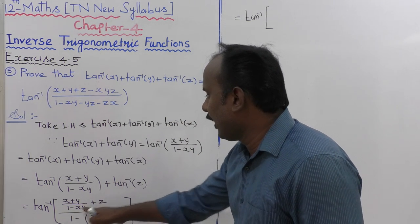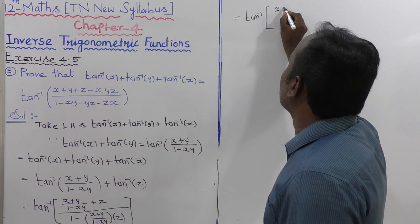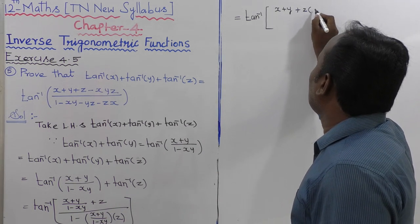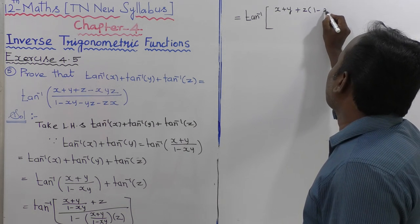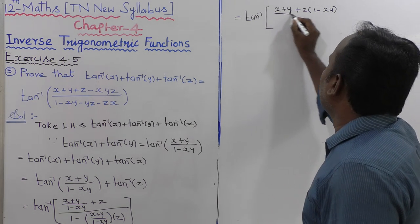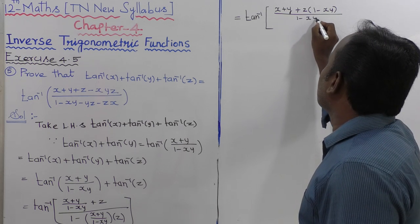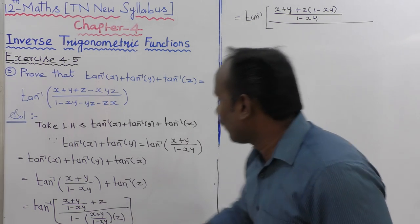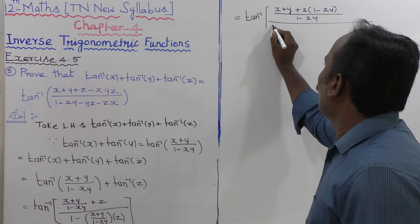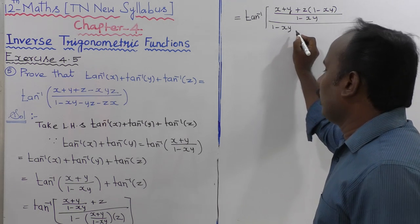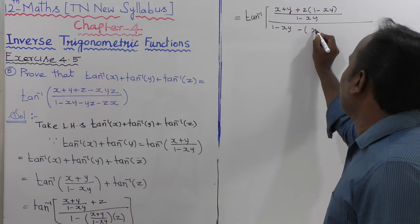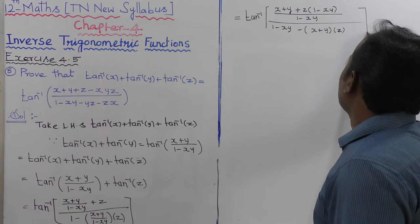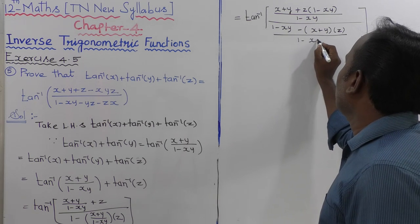By cross multiplication, the numerator becomes x plus y, plus z into 1 minus xy. The denominator becomes 1 minus xy, minus x plus y into z, that is, 1 minus xy minus xz minus yz, the whole divided by 1 minus xy.